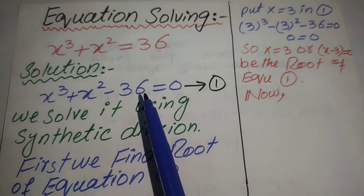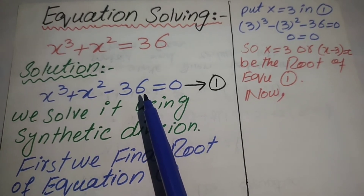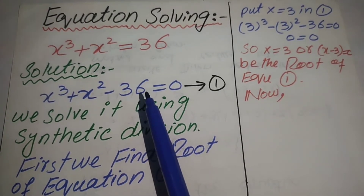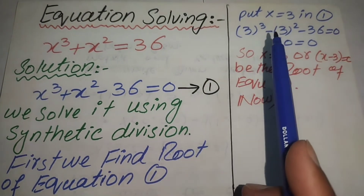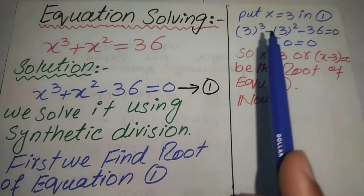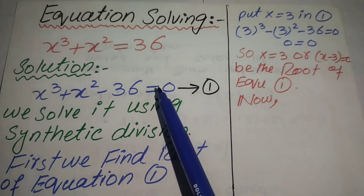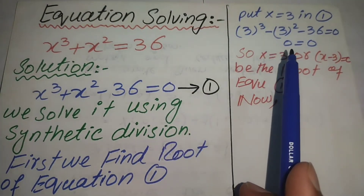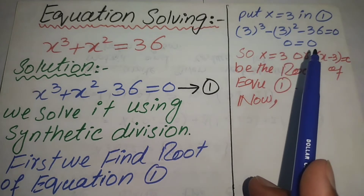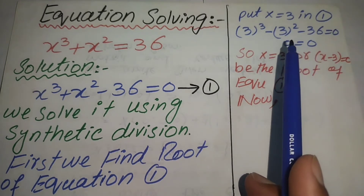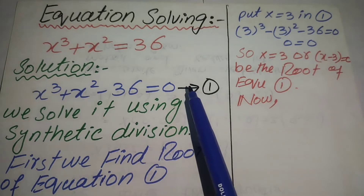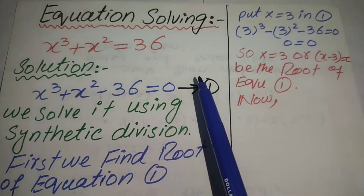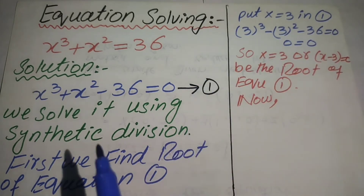We find that x = 3 satisfies the equation. When we substitute x = 3 into equation number one, we get zero equals zero. So we say that 3 satisfies the equation, or that 3 is the root of equation number one.